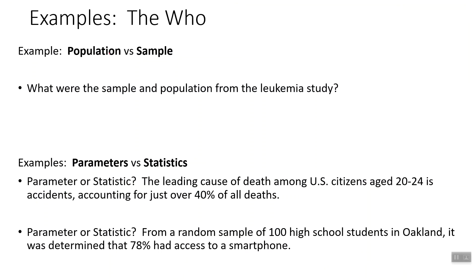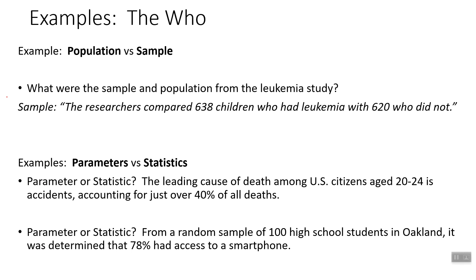So can we tell the difference between populations and samples? Let's go back to our leukemia study. We didn't check every single child in the U.S. It specifically said that researchers compared 638 children who had leukemia with 620 who did not — that's our sample of 1,258 children. But the population here would be all children, because we could have selected any child, and the conclusion we draw is that power lines did not cause cancer in all children.